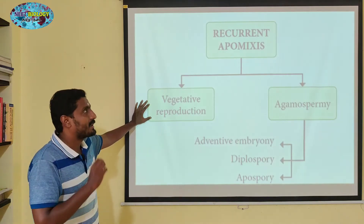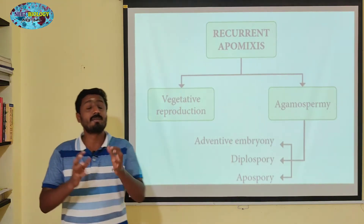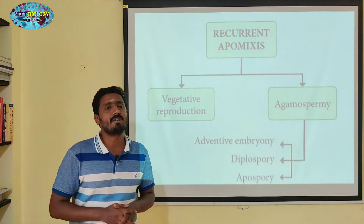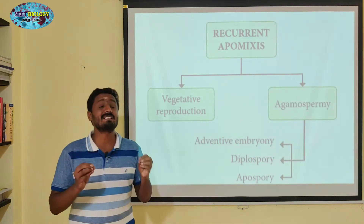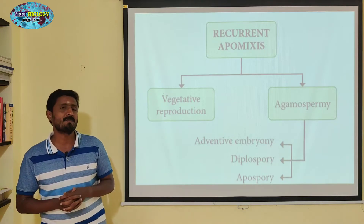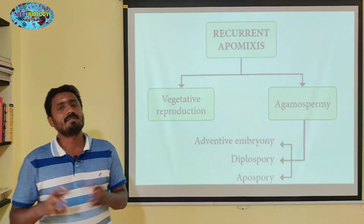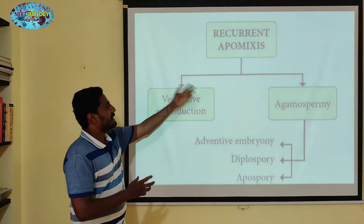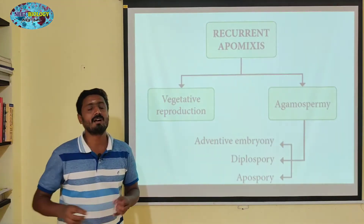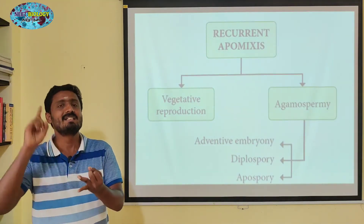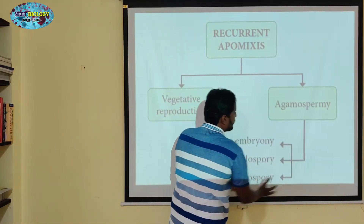What is the type of recurrent apomixis? There is a type involving favorable conditions, which is sexual reproduction with fertilization, called amphimixis. In unfavorable conditions, you can select this type. There is a type involving meiosis and syngamy.